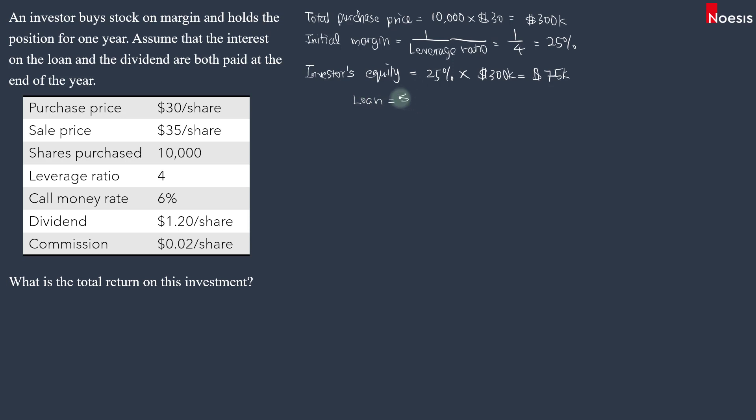That will be the $300,000 minus $75,000. So that's $225,000. This loan here will have an interest rate on it, which is 6% a year. We call that the call money rate.